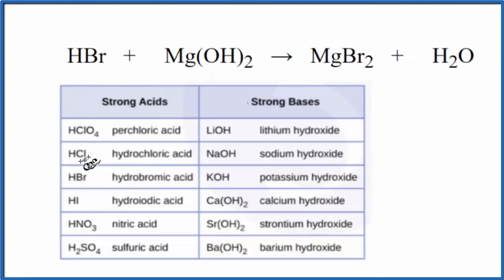So I'm looking for HBr right here, hydrobromic acid. That's a strong acid, SA there. Magnesium hydroxide, we're looking down our list of strong bases, and it's not there. It's not on our list. This is a weak base.